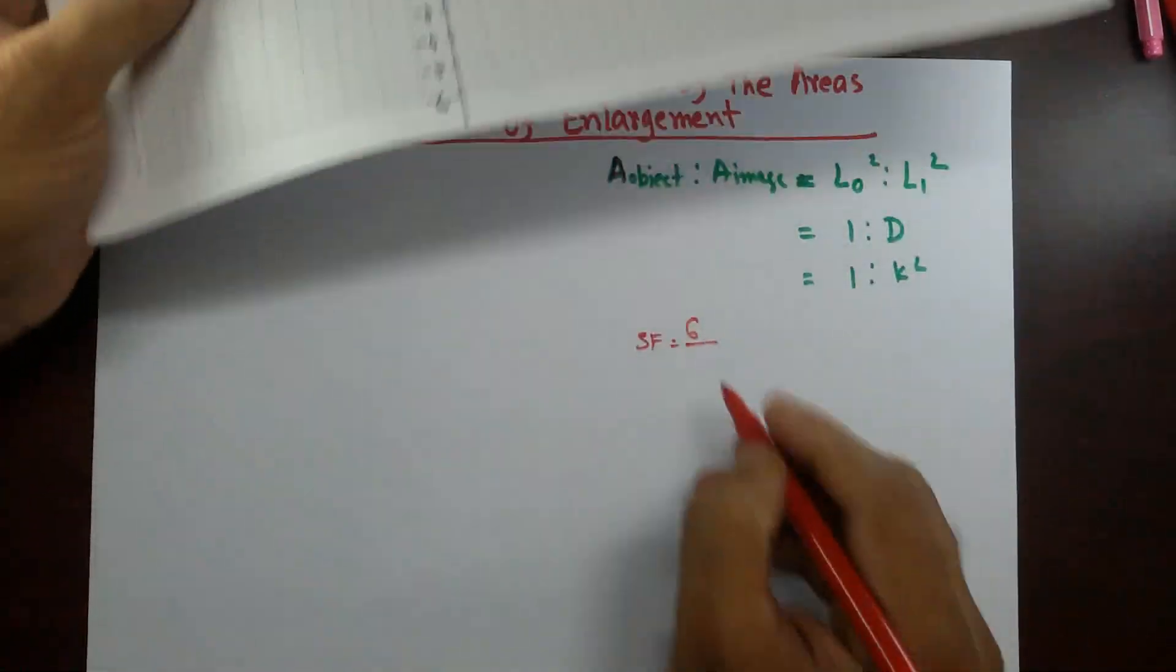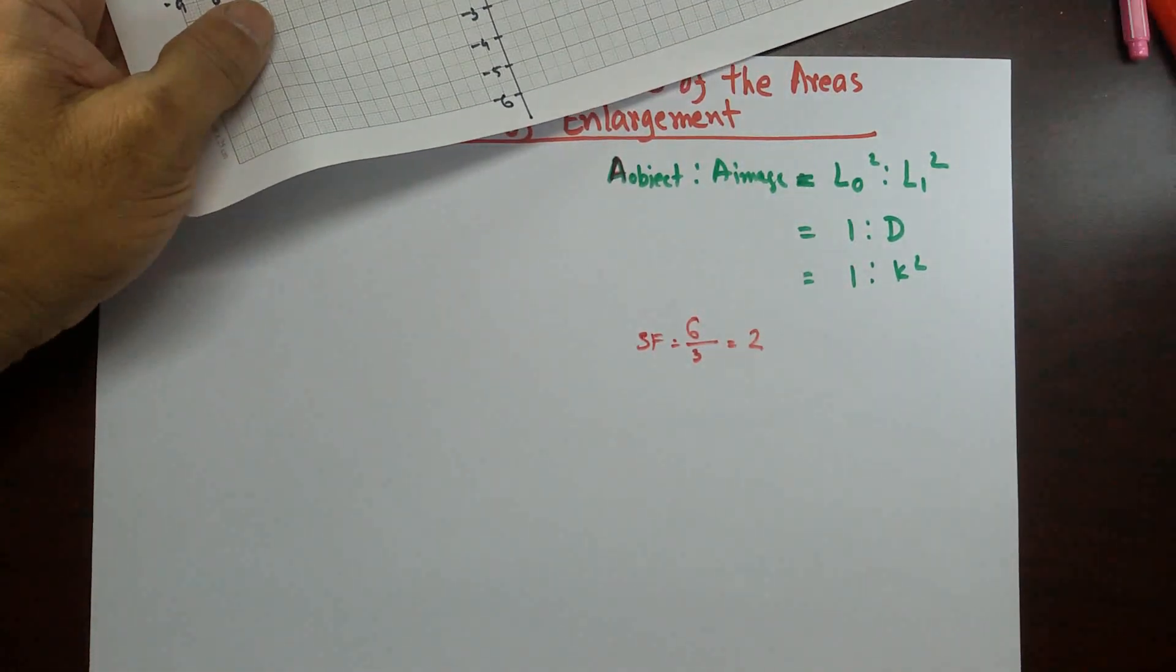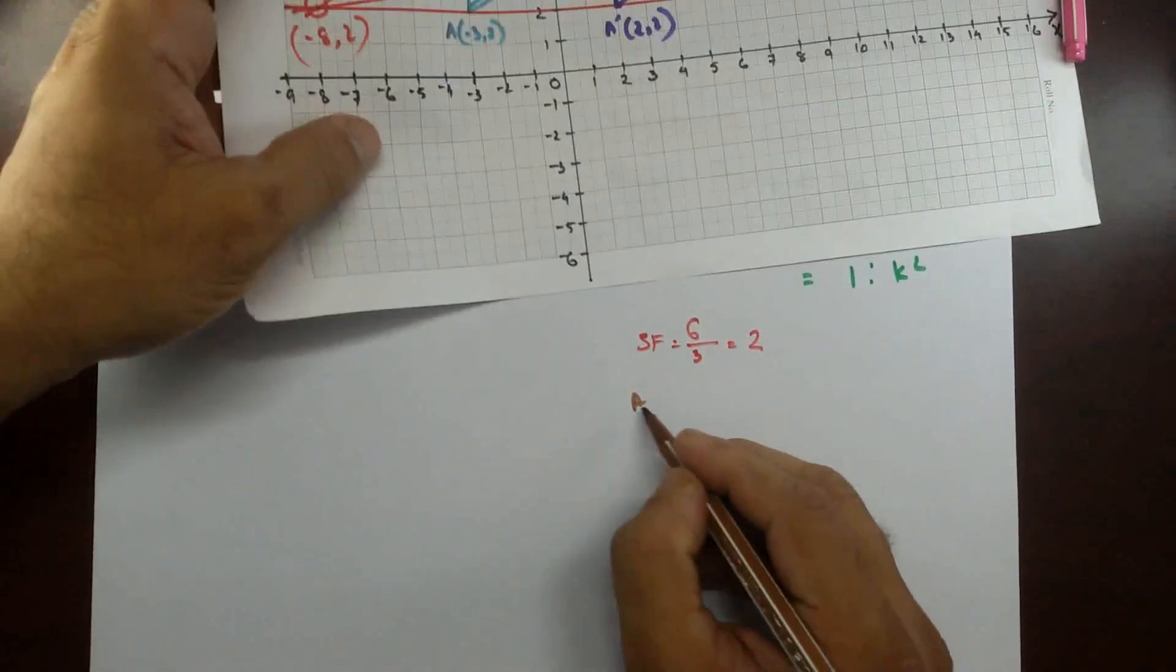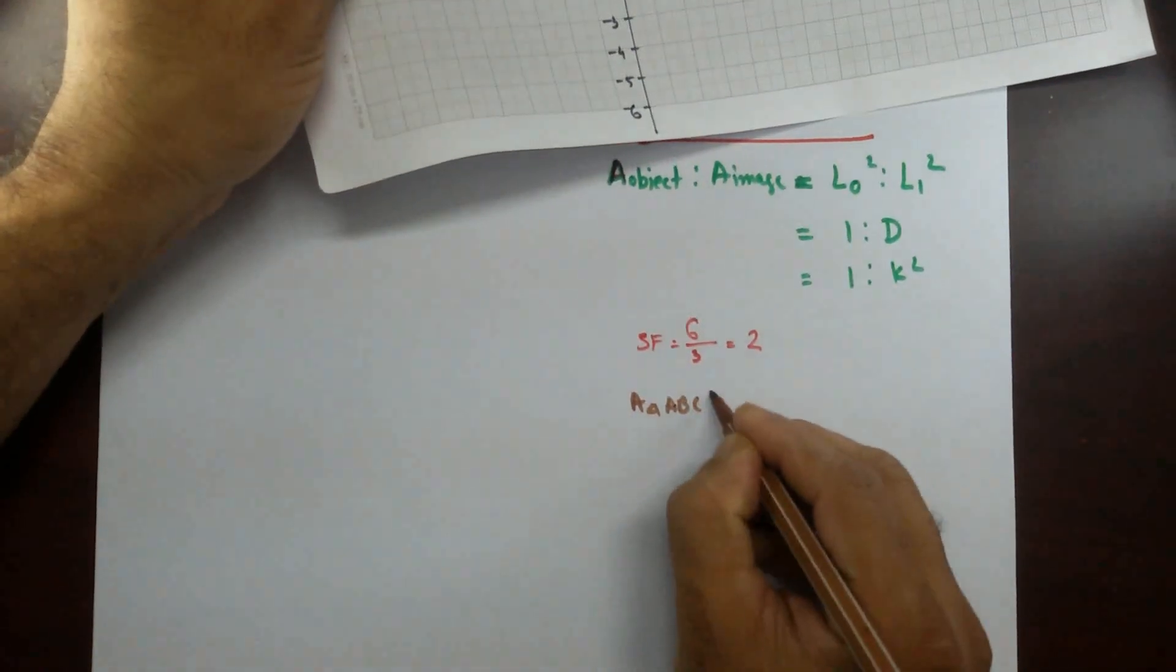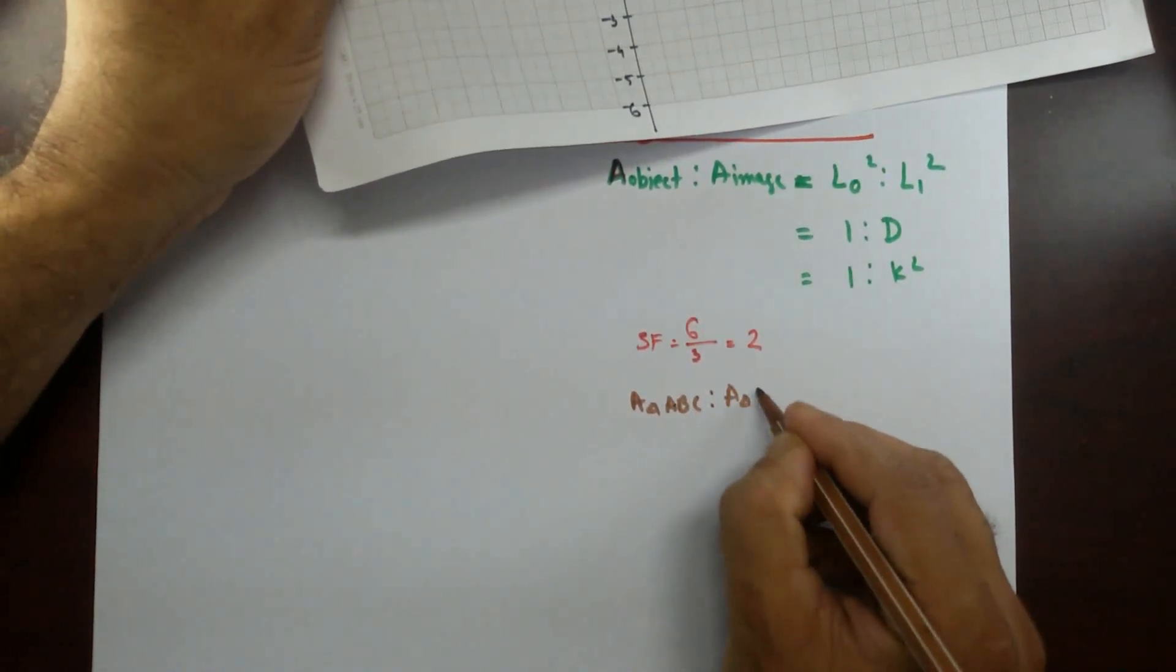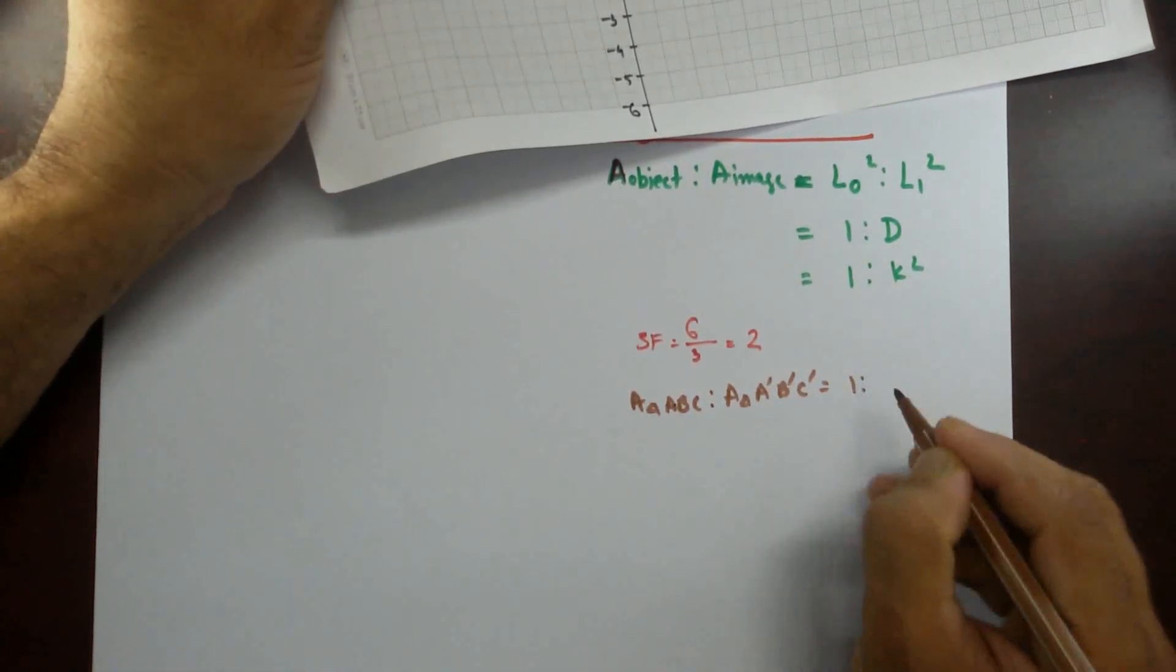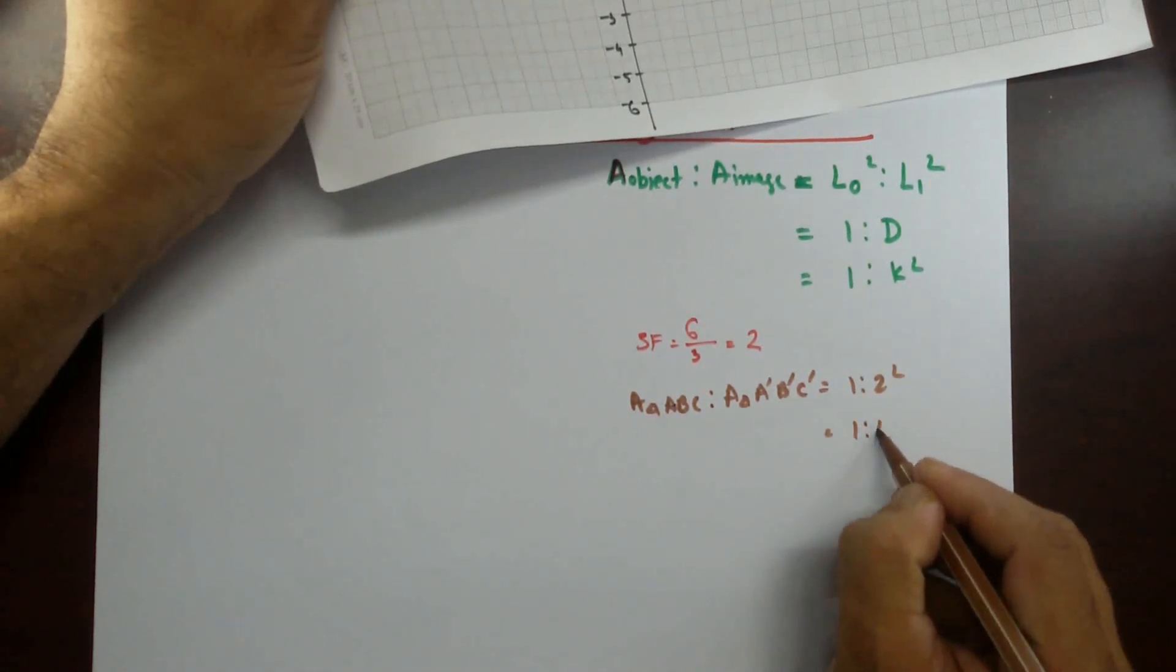Scale factor 6 divided by 1, 2, 3. So 3 is 2. So if we are using this formula, so this area of the object, area of the triangle ABC. Area of the triangle A prime, B prime, C prime would be 1 is to 2 squared equal to 1 is to 4.